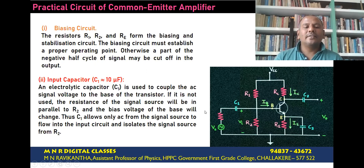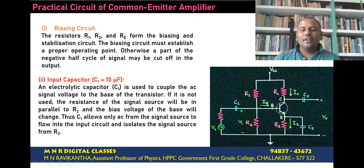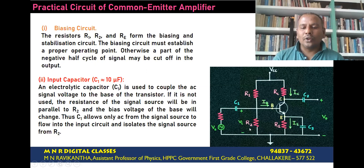The second circuit element is the input capacitor. The input capacitor is an electrolytic capacitor, usually of the order of 10 microfarads. It is used to couple the AC input signal voltage to the base of the transistor. C1 is used to couple the signal voltage to the base of the transistor. Suppose this C1 is not used, then the resistance of the source RS comes in parallel with the biasing resistance R2.